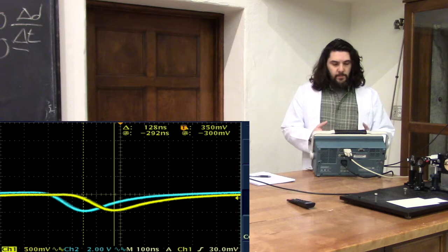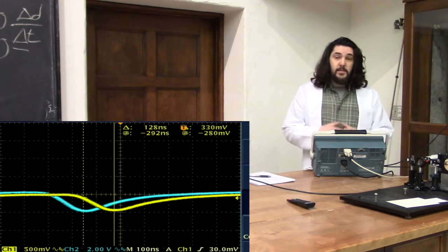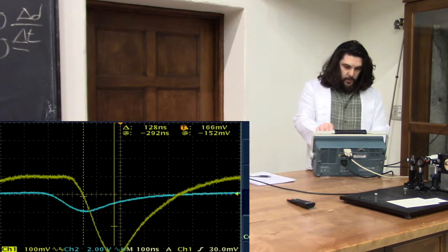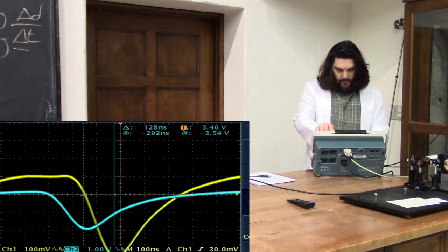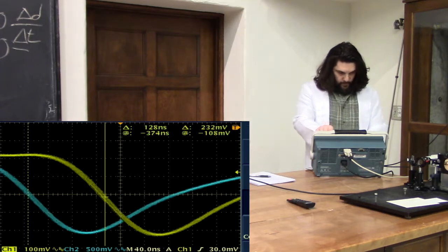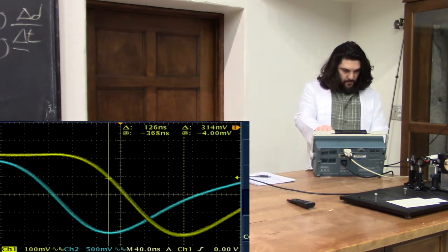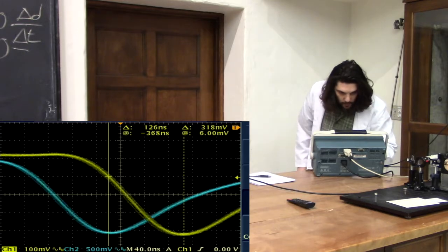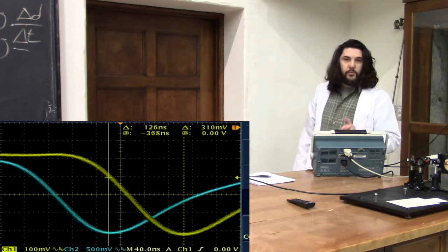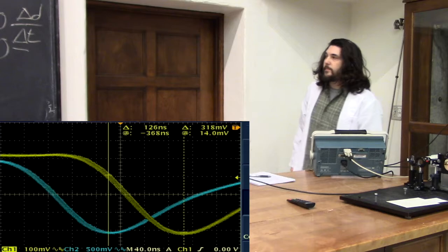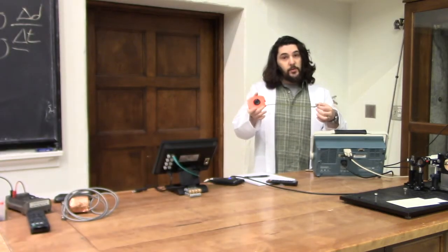So we can clearly see that the signals are basically identical, but one of them is delayed from the other. So if we zoom in on those minima, we can see a difference of 126 nanoseconds. Now I just have to measure the distance to the other mirrors.